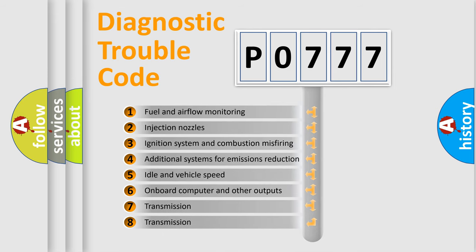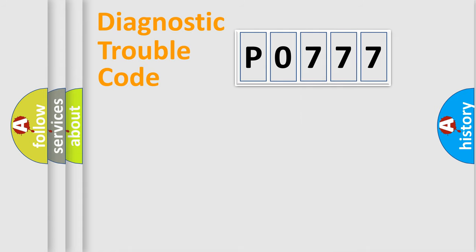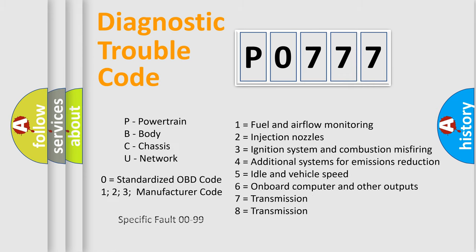The third character specifies a subset of errors. The distribution shown is valid only for the standardized DTC code. Only the last two characters define the specific fault of the group. Let's not forget that such a division is valid only if the other character code is expressed by the number zero.